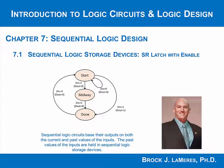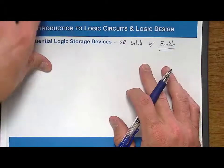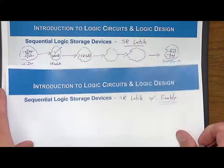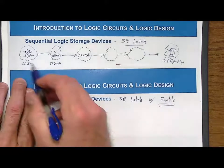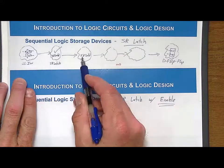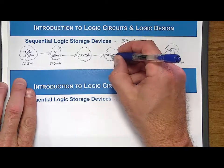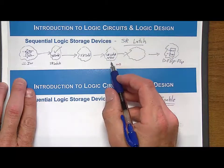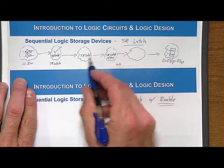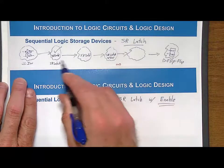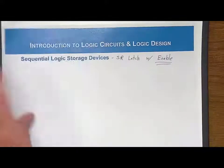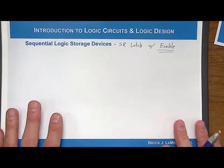Now we look at yet another sequential logic storage device called the SR Latch with Enable. Just to remember where we're at, we're working from the cross-coupled inverter to the D flip-flop. We started with the cross-coupled inverter, did the SR Latch, then the S-bar R-bar Latch, and now we're doing an SR Latch with Enable. The Enable circuit we put into this new latch is the reason we wanted to have an inverted version of the SR Latch — so that was an interim step.